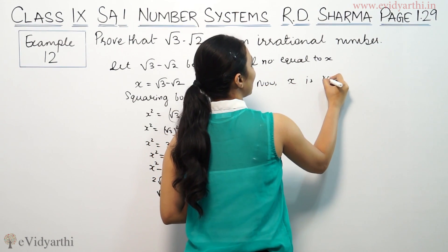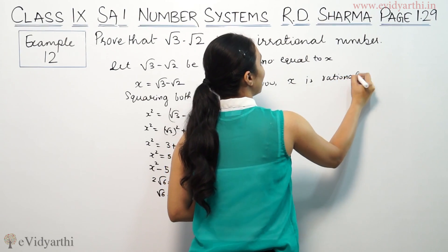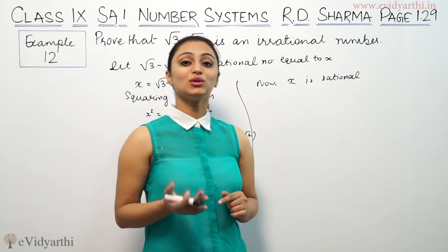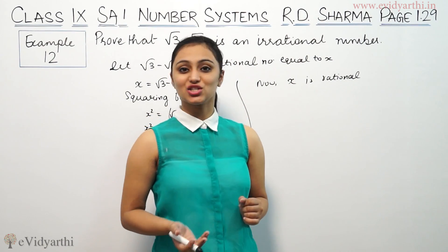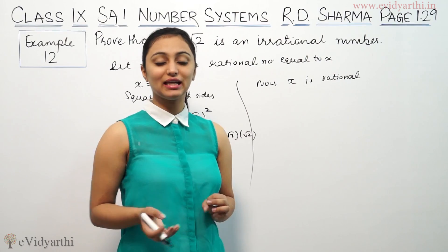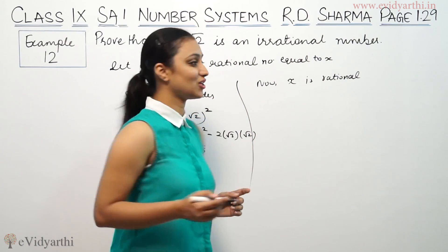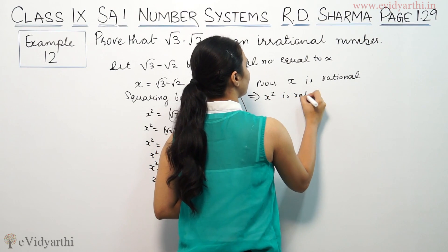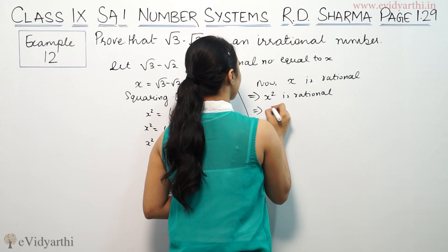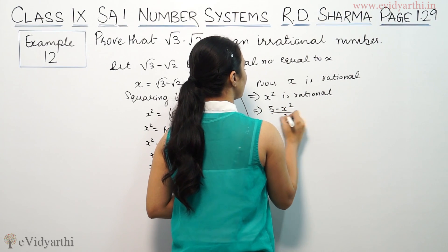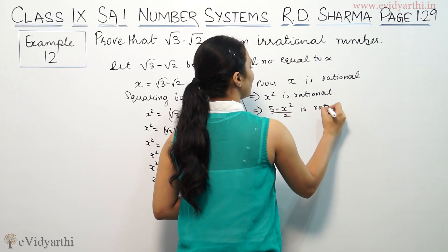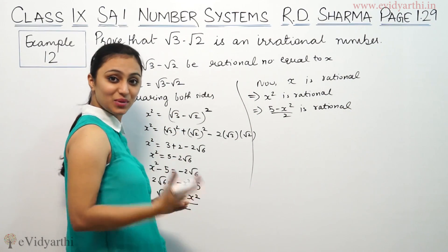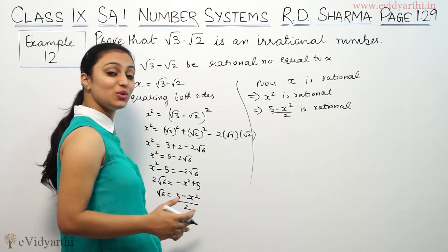Now, x is rational. If x is a rational number, then x squared is also rational — suppose 2 is a rational number, then 2 squared equals 4 is also rational. This implies x squared is rational. This implies that 5 minus x squared divided by 2 is rational, and therefore root 6 would be rational.